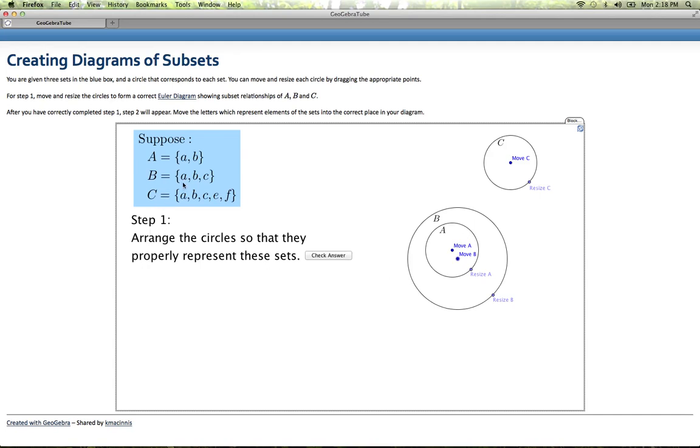Then I'm going to notice that everything that's in B is also in C. So set C needs to contain set B, which means it will also contain set A. So I'm going to move C over here, and resize it, move and resize in any order.